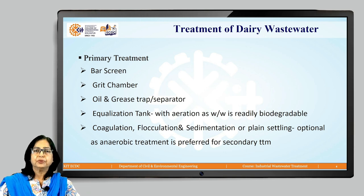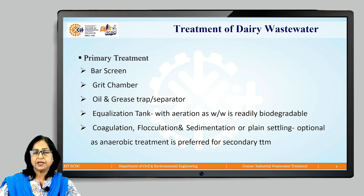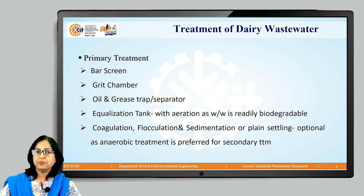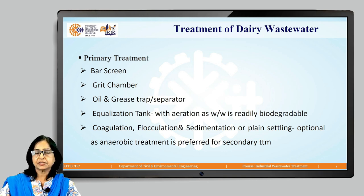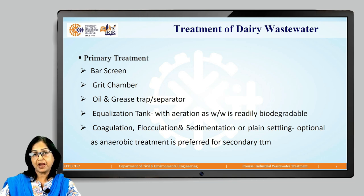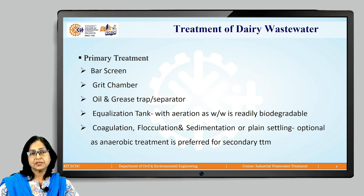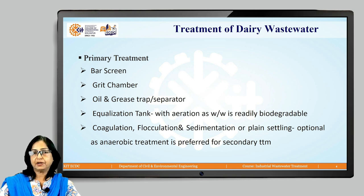The characteristics of dairy wastewater include high BOD, COD, TDS, suspended solids, and oil and grease, so it requires both primary and secondary treatment. Primary treatment consists of a bar screen followed by a grit chamber to remove settleable heavy inorganic solids, followed by an oil and grease trap or separator. Since dairy wastewater contains a high amount of oil and grease (fat), its removal is essential.